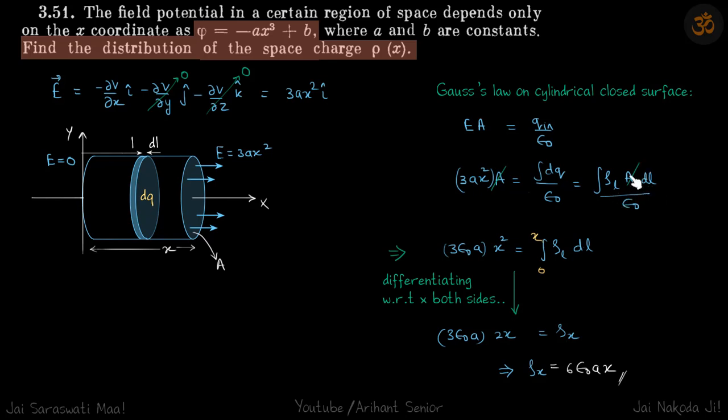So A will get cancelled and you'll be left with 3ε₀ax² = integral from 0 to x of ρ_l dl for total charge.